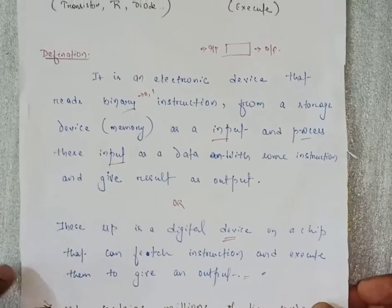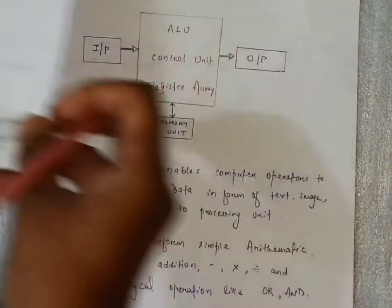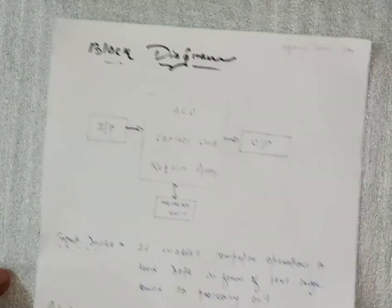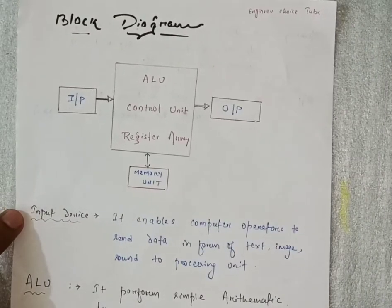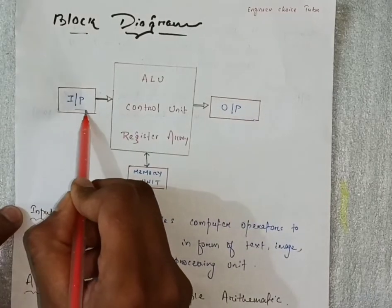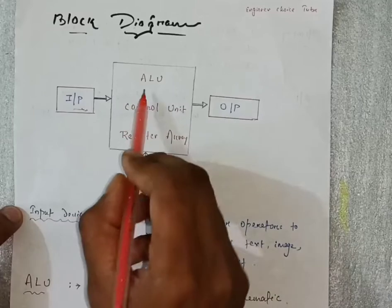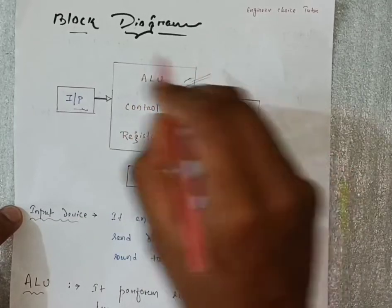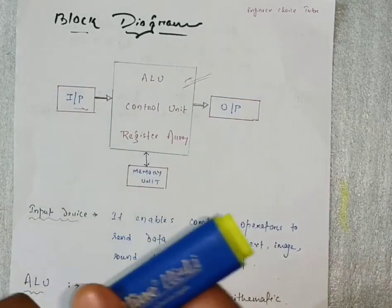That is the definition of microprocessor. Now we will move ahead to the block diagram of microprocessor. Here we are feeding the input - this is our microprocessor.